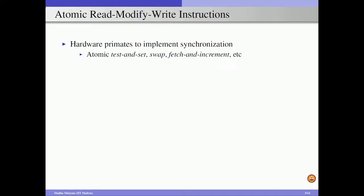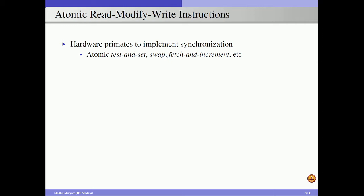We need hardware primitives such as test-and-set, swap, fetch-and-increment, and similar instructions in our ISA. The first step is to load a value from a memory location to a register, modify the register content, and finally write this register content back to the memory location. Since this memory location holds the synchronization variable, performing these three operations atomically prevents multiple processes from acquiring the same lock and entering the critical section.